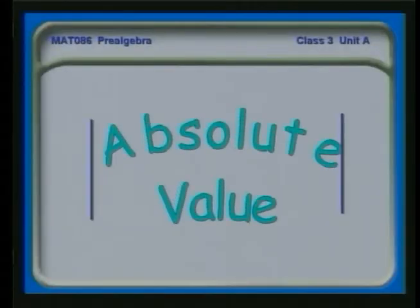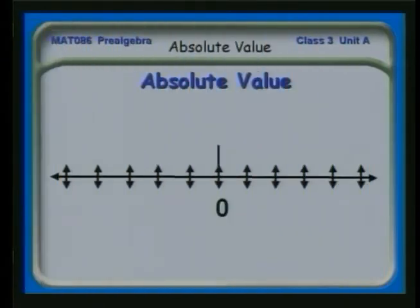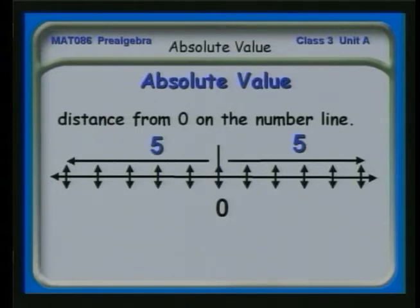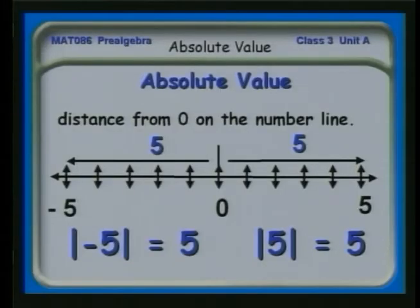We can also look at another definition in this mathematics of integers that has a lot to do with opposites, and that's absolute value. The absolute value is this: if I go from zero on the number line to five one way, or zero to five the other way, even though I wind up in one case at plus five and the other case at minus five, I have traveled the same distance. So if I look at how far I go — not the direction but just the distance — that is called the absolute value.